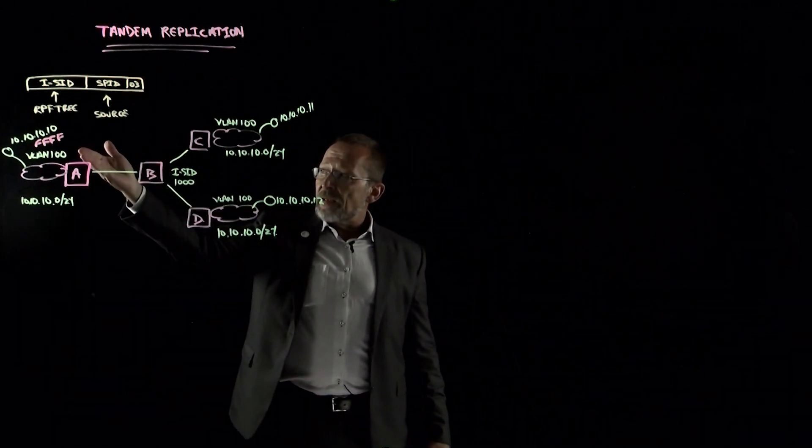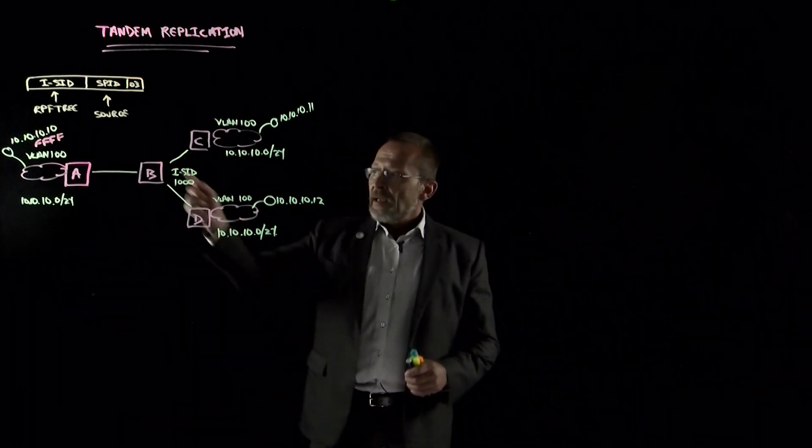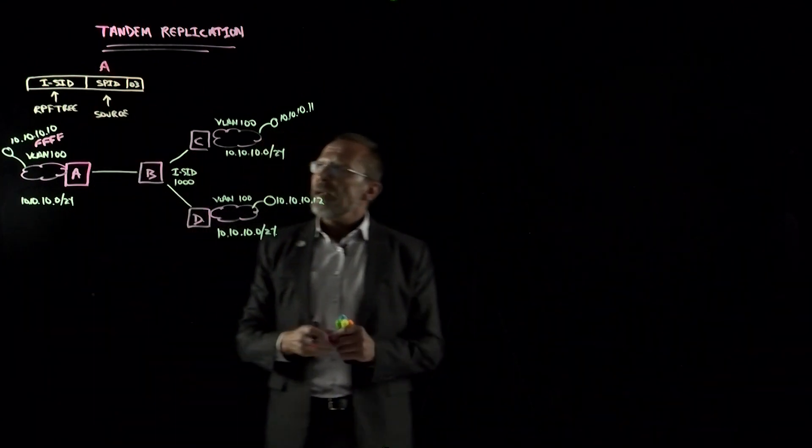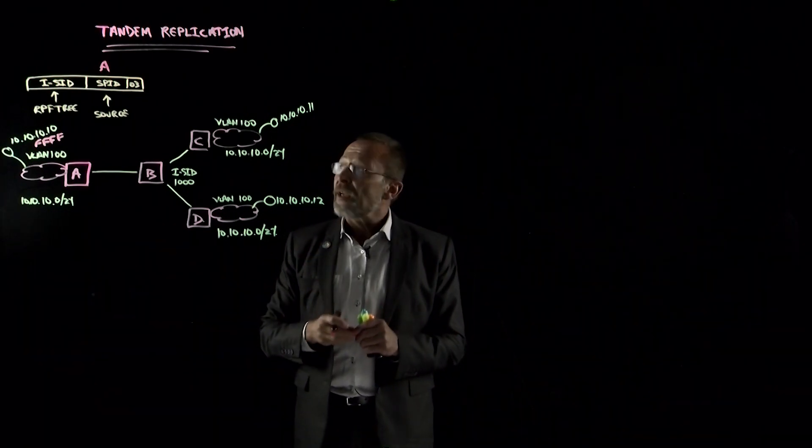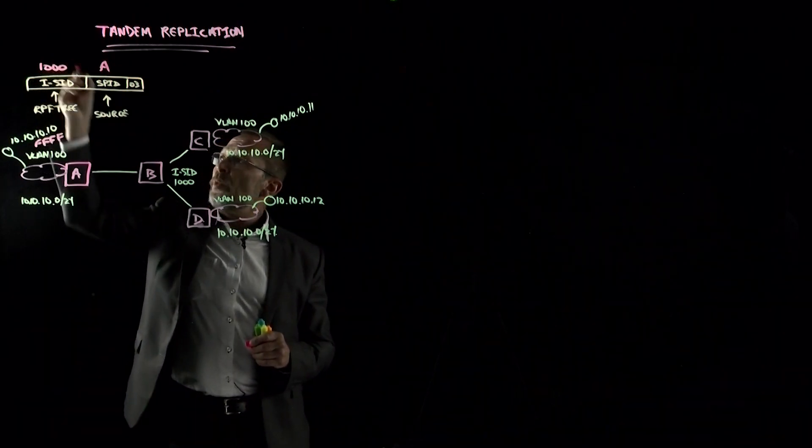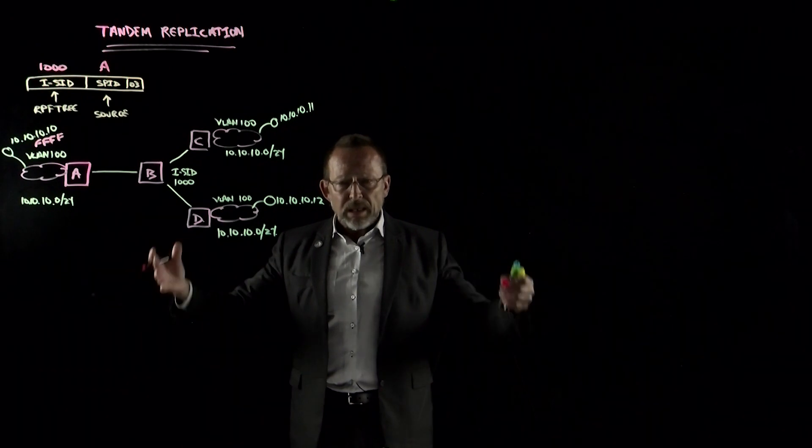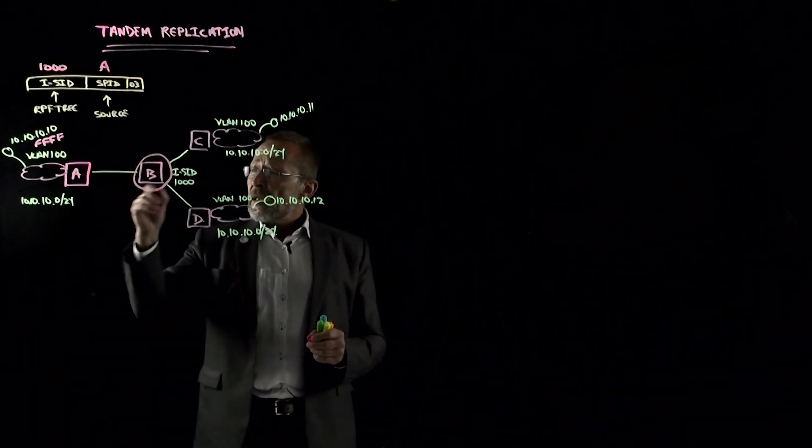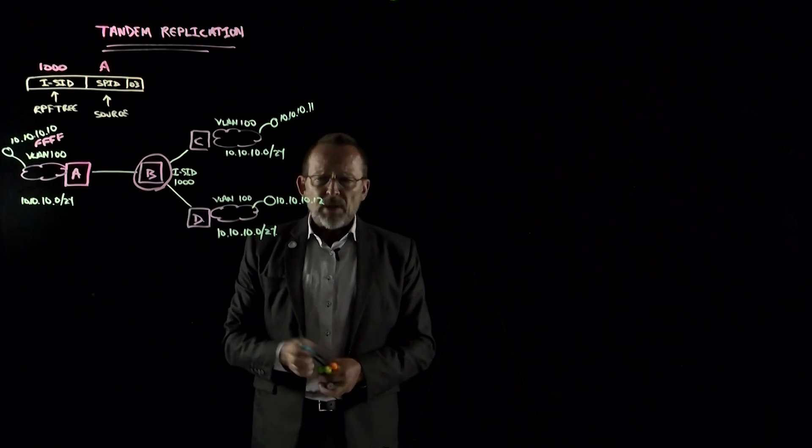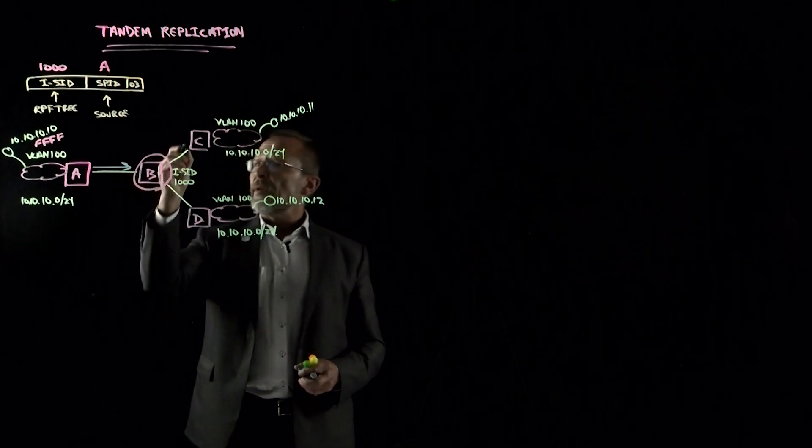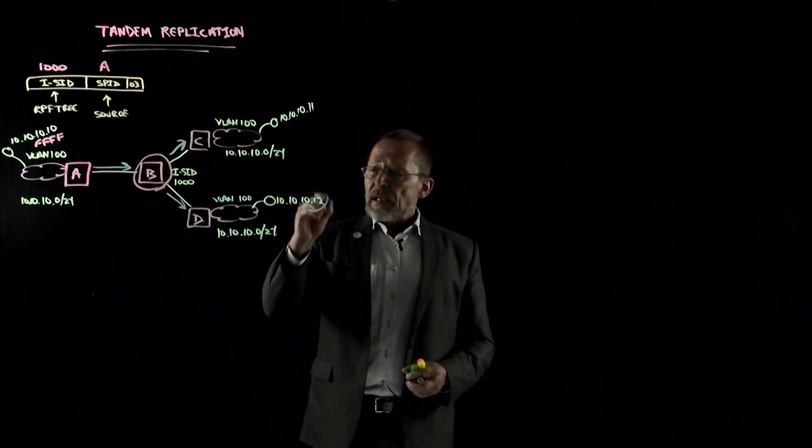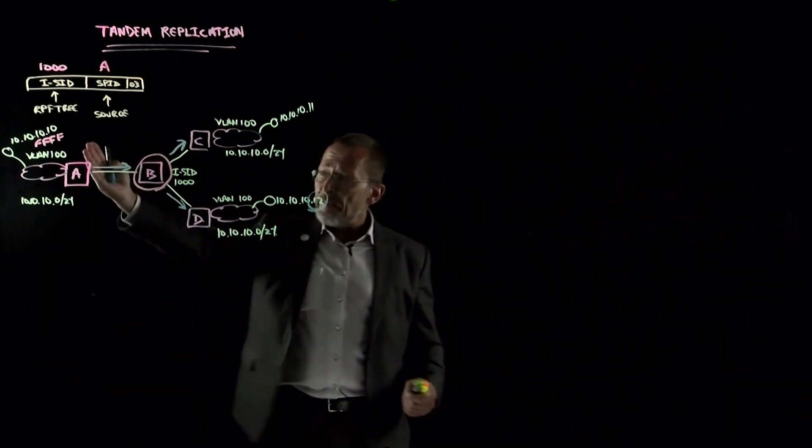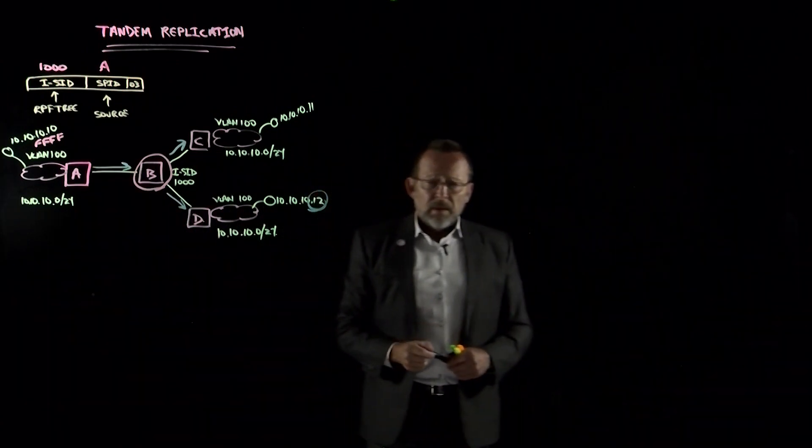Switch A, the backbone edge bridge, will automatically append its source information into the shortest path source ID. The next thing it will do is append the ISID information, which is basically 1000, and that is hexed out and placed in to create a complete multicast BMAC address. Now we have all of the information so that B can notice the fact that it needs to replicate. The multicast traffic is sent out over the network and replicated to all points. 10.10.10.12 now sees the broadcast and responds, and I have unicast behavior after that.